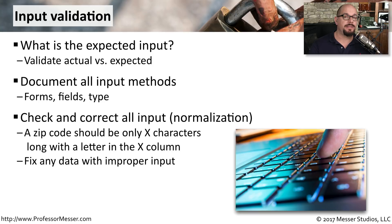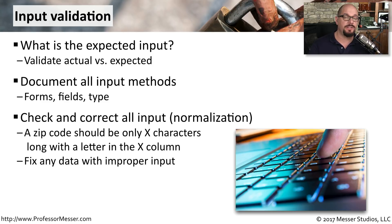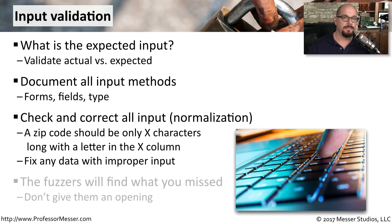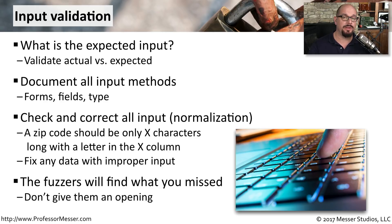For example, your application may be accepting zip codes from a different country. You know the zip code should only be a certain number of characters long and should always have a letter in a certain column. If there are any problems with the input, your application should attempt to fix the problem or ask the user to input that data again. A fuzzer is a security tool that will randomly send information into the input of an application, and a simple fuzzing test will determine if your application is properly validating this information.